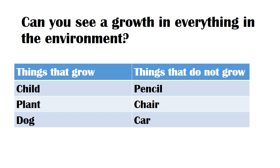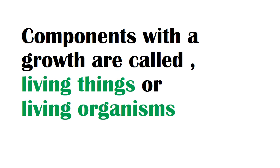Let's list them out. Things that grow: child, plant, dog. Things that do not grow: pencil, chair, car. Components with growth are called living things or living organisms.